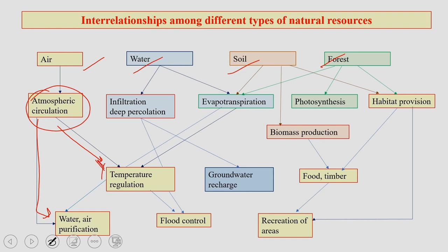Air also has a role to play in water and air purification. Once it plays a role in temperature, this also has a relation with evapotranspiration, which in turn has a relation with soil. Water also involves infiltration and rainfall, which is regulated by temperature because it creates high or low humidity. Rainfall also has a relation with groundwater recharge, flood, soil, and forest — soil and forest are interlinked, soil and water are interlinked, and water and air are also interlinked.